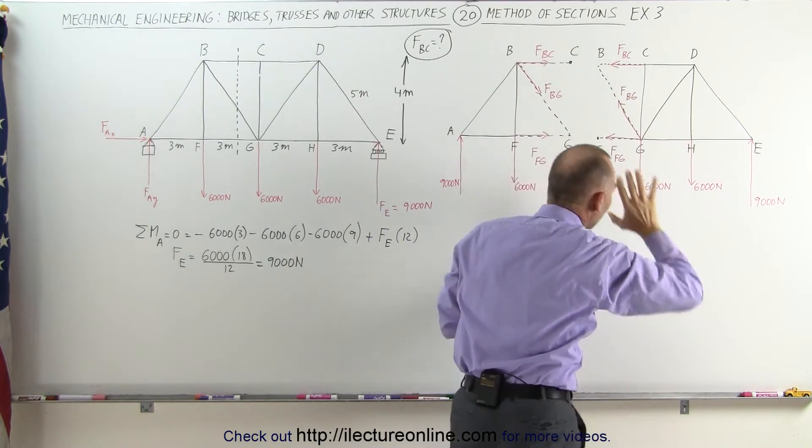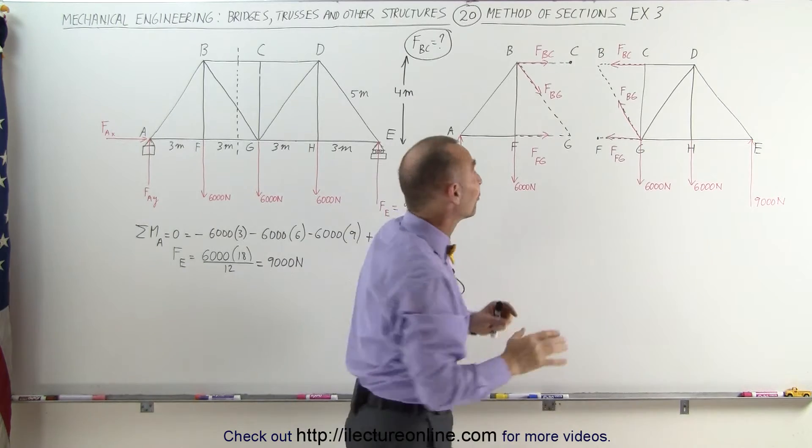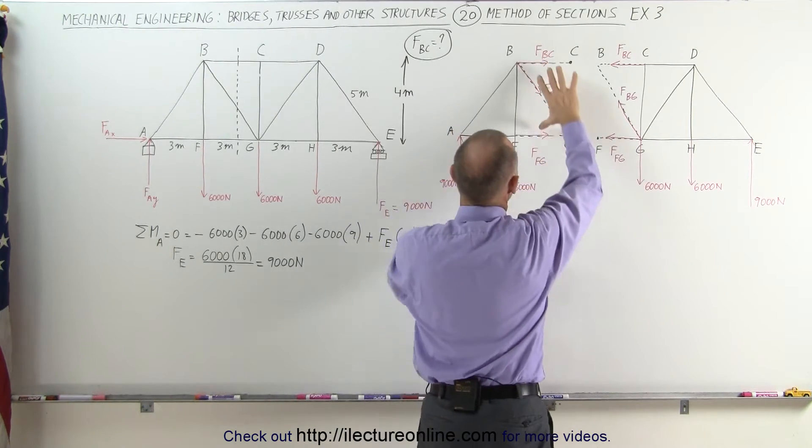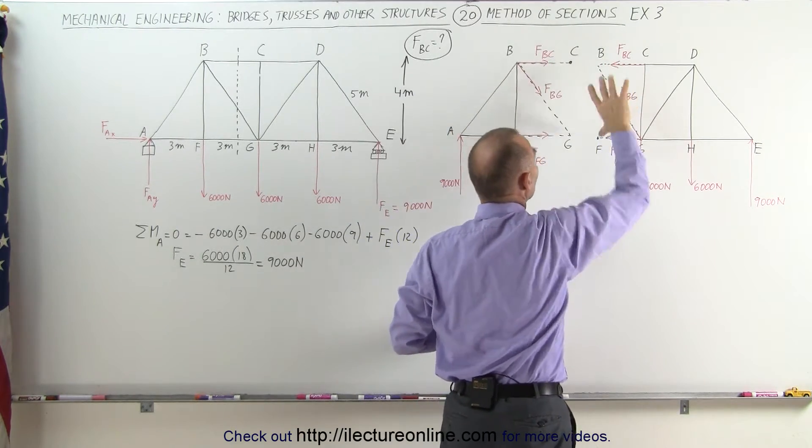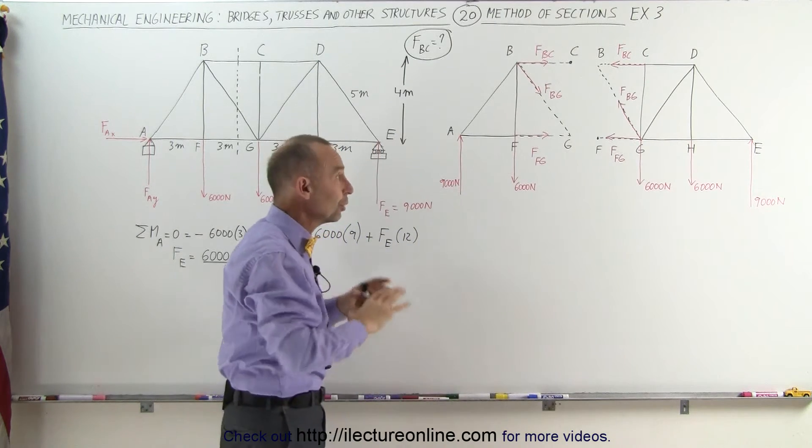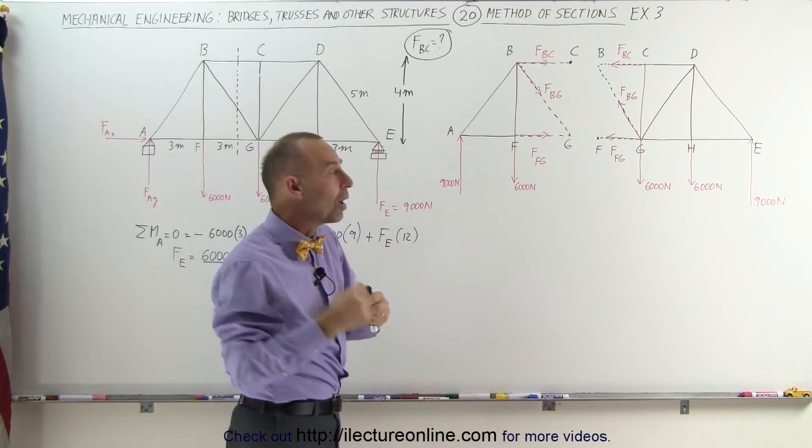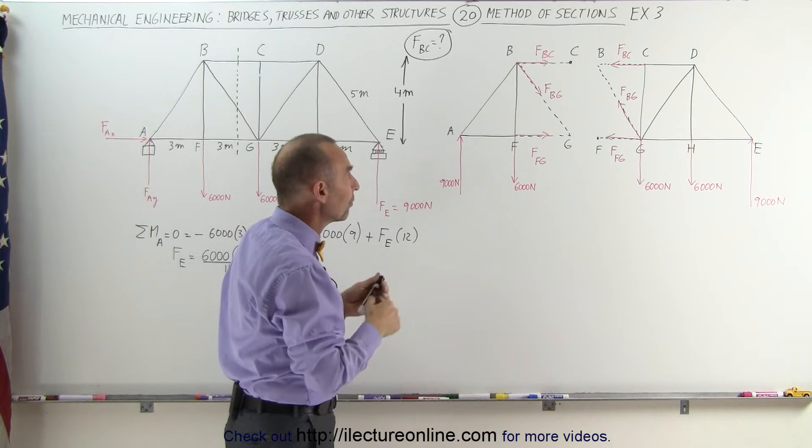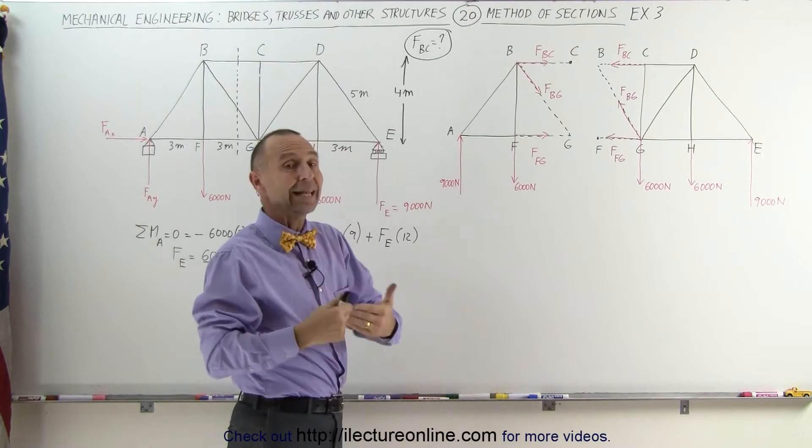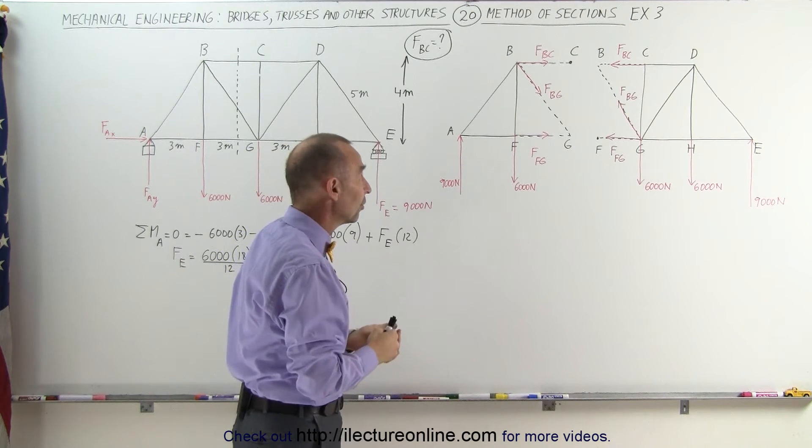where we have the ending members and ending joints right here, we drew the forces as if these members are under tension and those members are under tension, which may or may not be true. We don't worry about it. If we have it incorrectly, we simply get a negative answer, which means it's the opposite direction.